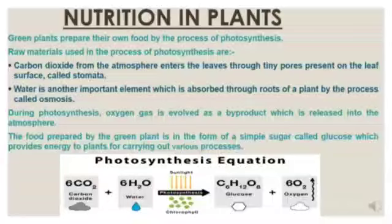Water is another important element which is absorbed through the roots of a plant by the process called osmosis. During the process of photosynthesis, oxygen gas is evolved as a by-product, which is released into the atmosphere. The food prepared by the green plant is in the form of simple sugar called glucose, which provides energy to plants. The equation: six CO₂ molecules react with six molecules of water in the presence of sunlight and chlorophyll to produce one molecule of glucose and six molecules of oxygen.